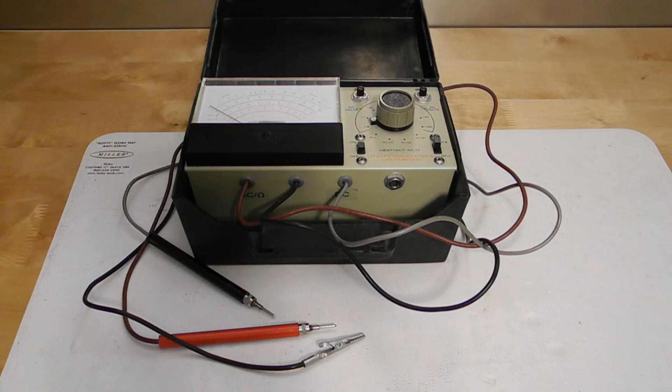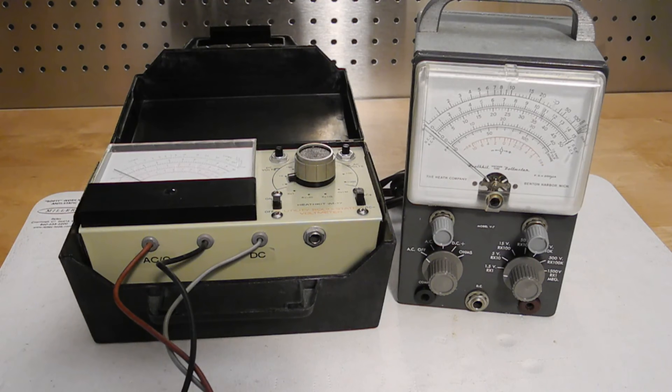An accessory input jack is provided that can be used with optional accessory probes. The catalog stated that it was not recommended for use in RF fields. I imagine that because it was in a plastic case it could give erroneous readings if used around a radio transmitter like that used for amateur radio. More expensive meters housed in metal cases would not have this issue.